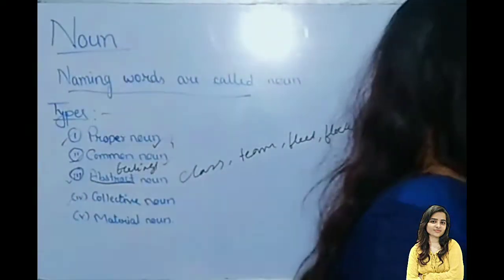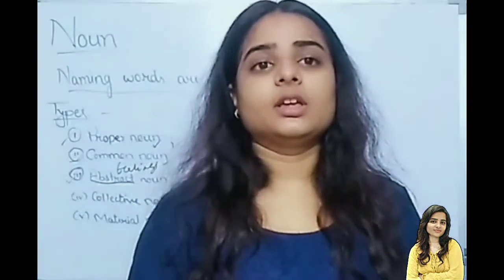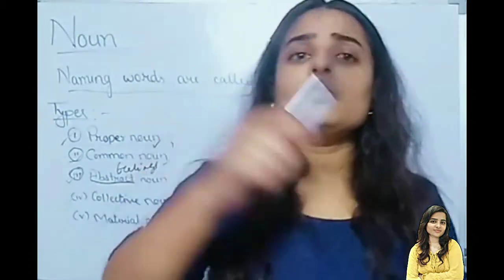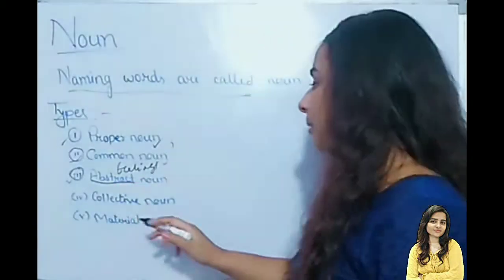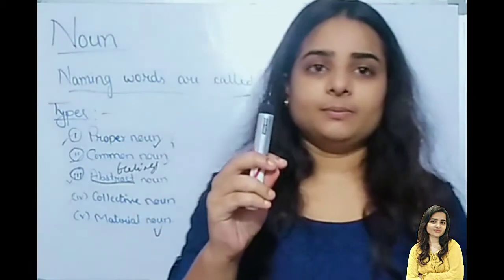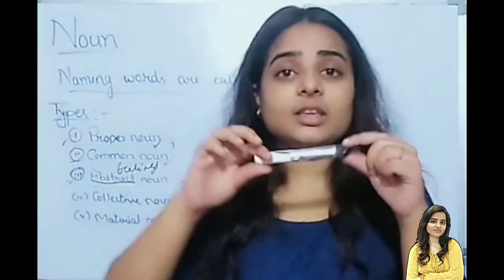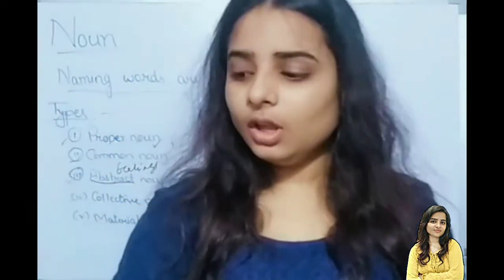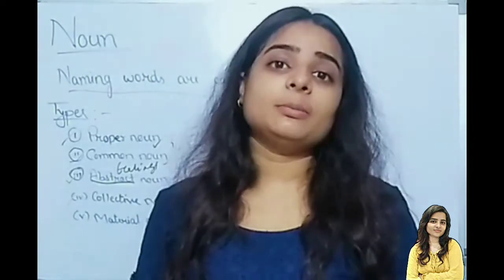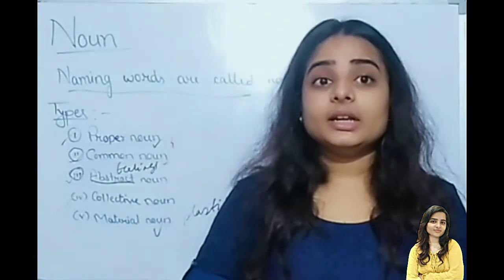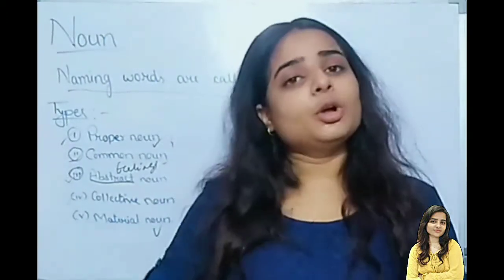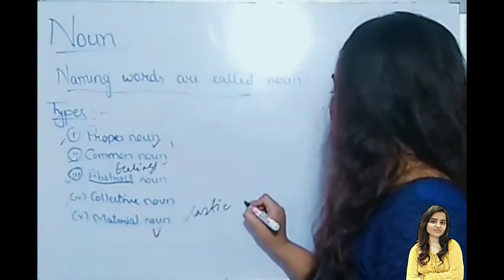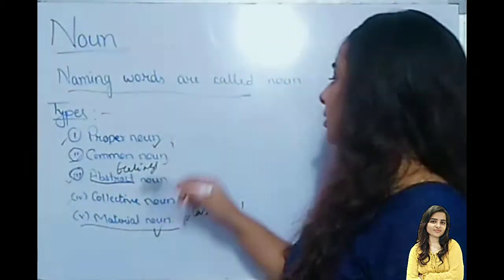Next: Material Noun. Everything around you is made of something. For example, glass is a material noun. My hand has a marker — marker is a common noun, but what is it made from? It is made from plastic — plastic is a material noun. Clothes can be different, but what are they made from? Cotton, polycotton, silk — these are material nouns.